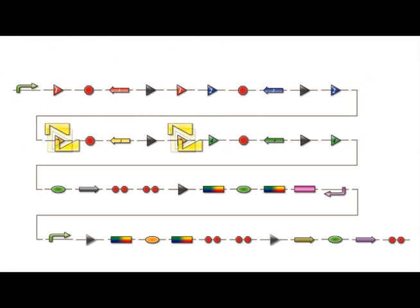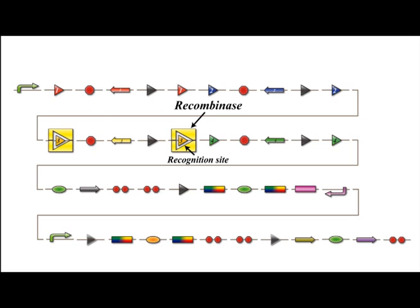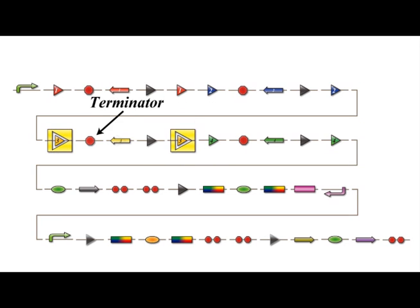For example, we imagine that the signal for number 3 or recombinase 3 comes into our cell first. The recombinase cuts out terminators between the recombination recognition sequences.